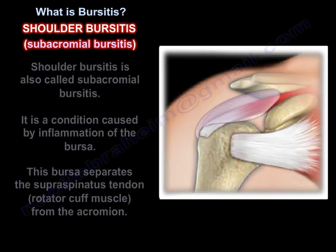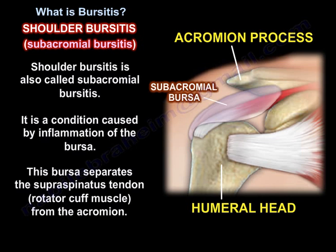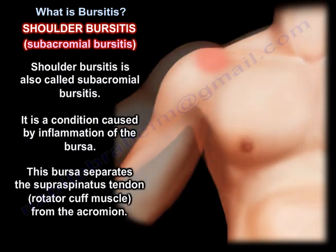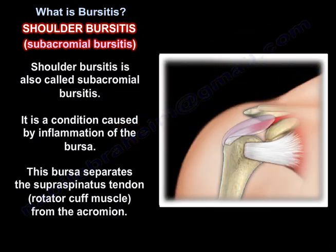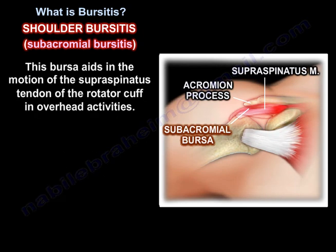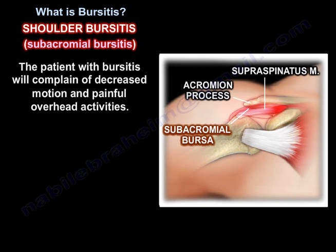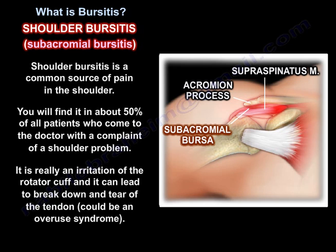Shoulder bursitis is also called subacromial bursitis. It is a condition caused by inflammation of the bursa that separates the supraspinatus tendon, which is a rotator cuff muscle, from the acromion. This bursa aids in the motion of the supraspinatus tendon of the rotator cuff in overhead activities. The patient will complain of decreased motion and painful overhead activities. Shoulder bursitis is found in about 50% of all patients who present with a shoulder problem, and it is really an irritation of the rotator cuff that can lead to breakdown and tear of the tendon.